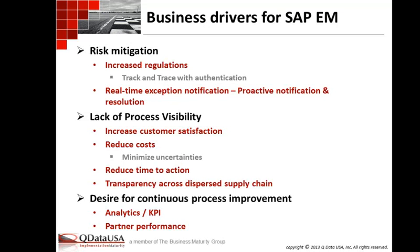Increased customer satisfaction — you can provide status visibility to your customer, just the detail they're interested in. The desire for continuous improvement: once we've established our plan, put it out there, put our events against it, measured them, and uncovered exceptions — once the process is finished, we pass all that information into a BW type world so we can roll them up into KPIs, key performance indicators, and run our analytics against them. We can start to answer questions like how well did we perform and where are the issues we need to address.